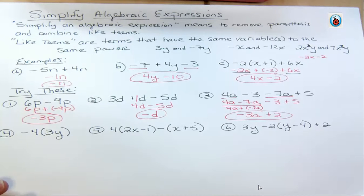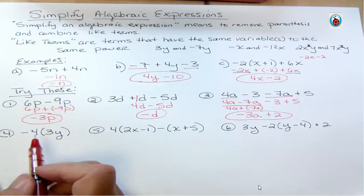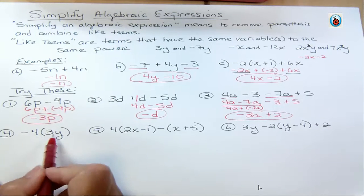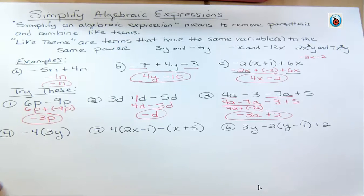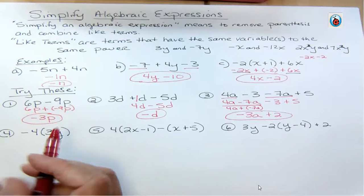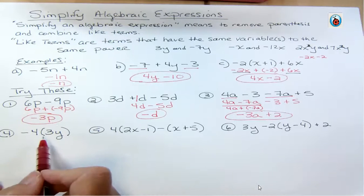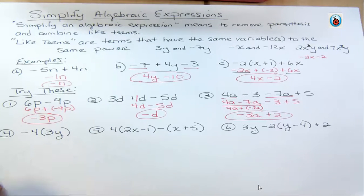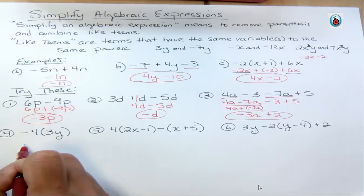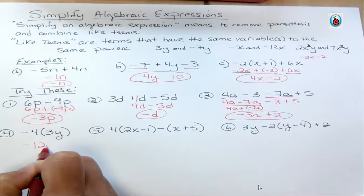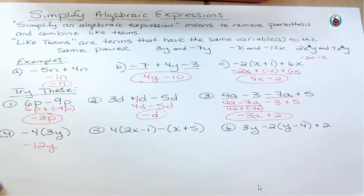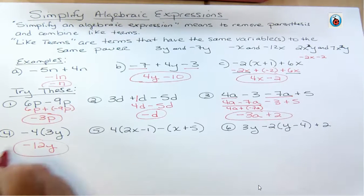For number four, when we multiply there's no rule requiring the same variable — we just multiply. So this is simply −4 times 3y, which equals −12y. That's all we need to do for that one.